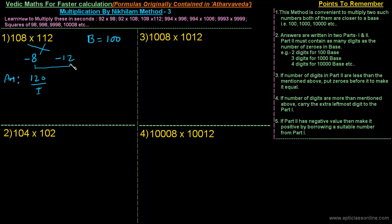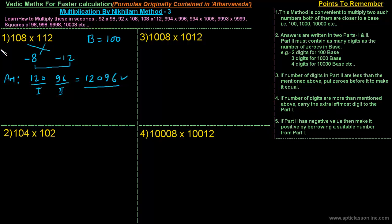The second part is the multiplication of minus 8 and minus 12, which is 96. This is written in continuation to the first part. We check whether part 2 contains as many digits as the number of zeros in the base — that is, 2 digits. It already contains 2 digits, so the final answer is 12096.